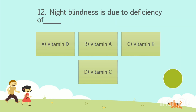Question No. 12. Night blindness is due to deficiency of — ? Option A: Vitamin D. Option B: Vitamin A. Option C: Vitamin K. Option D: Vitamin C. Your time starts now. The answer is Option B, Vitamin A.